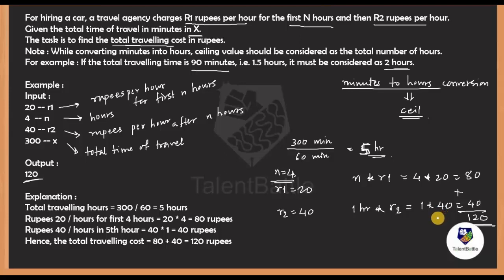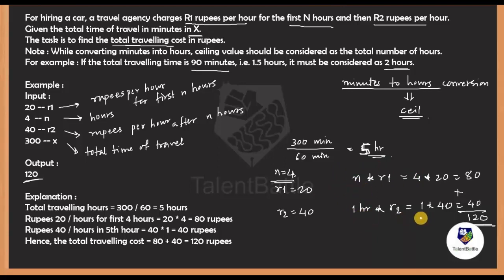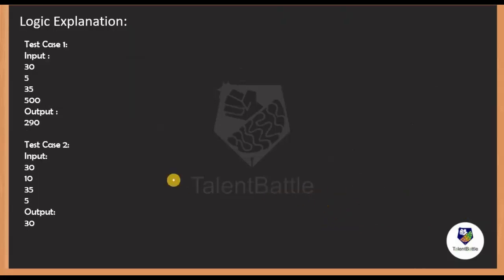The step-by-step approach: calculate total hours from minutes, then apply two conditions. First, multiply n by r1 to get the cost for the first n hours. Second, calculate remaining hours as total hours minus n, multiply by r2 for the remaining cost. Addition of both gives the total traveling cost.